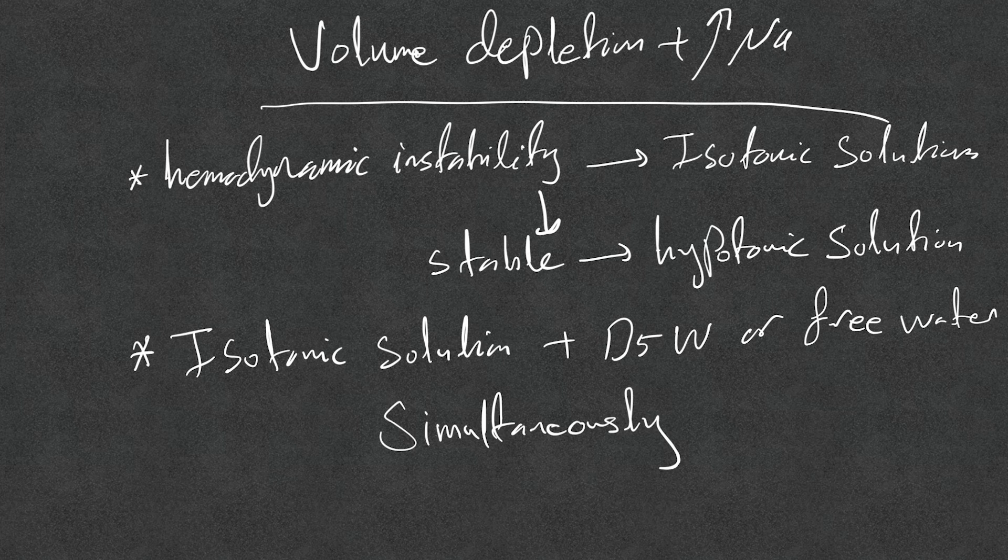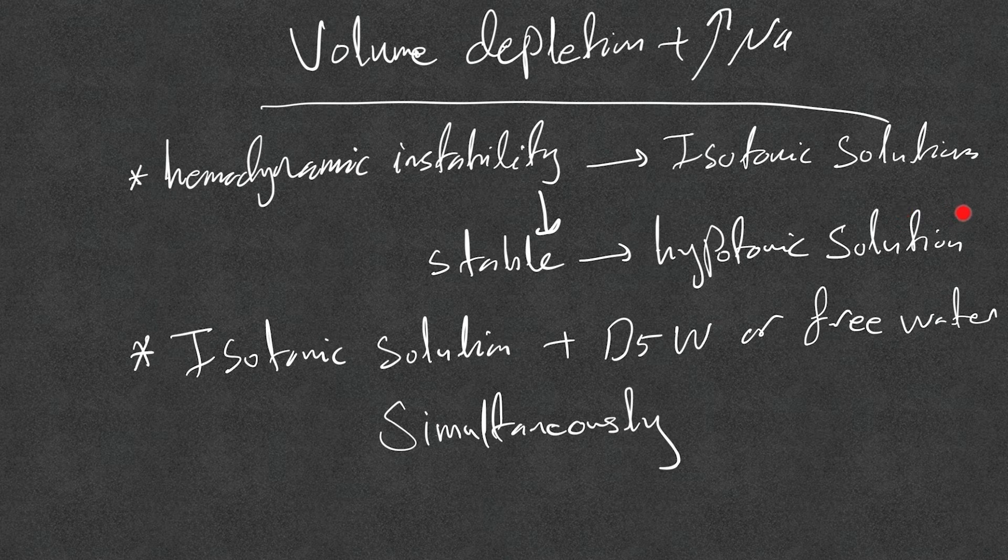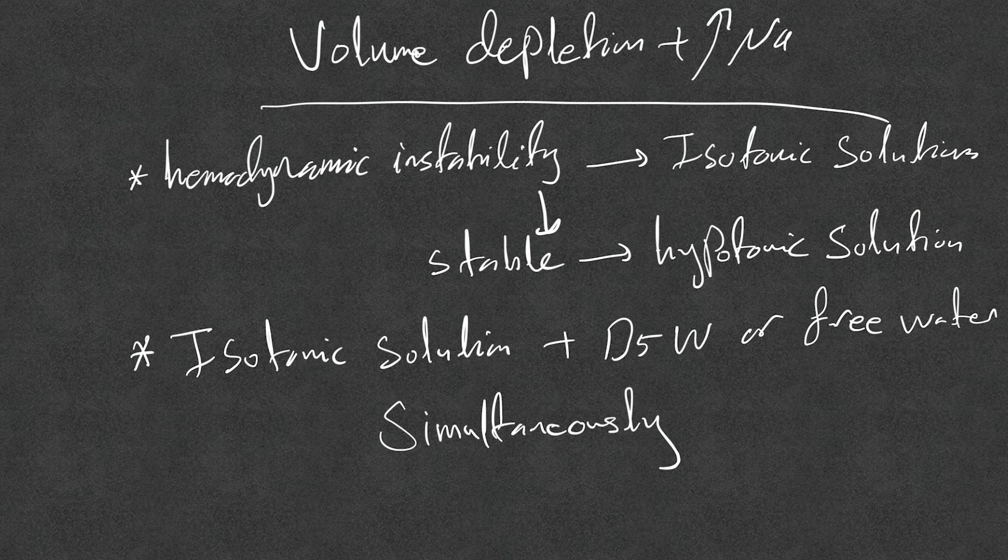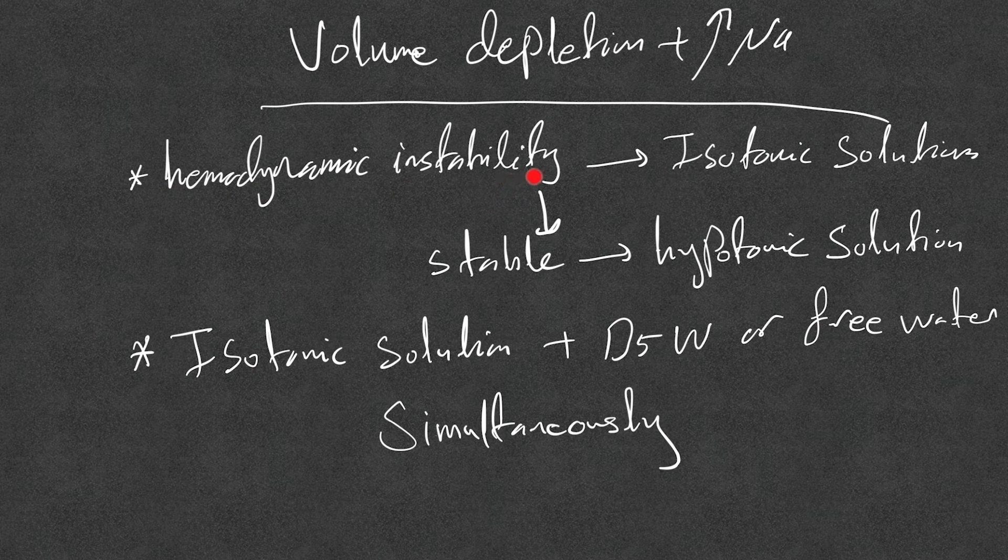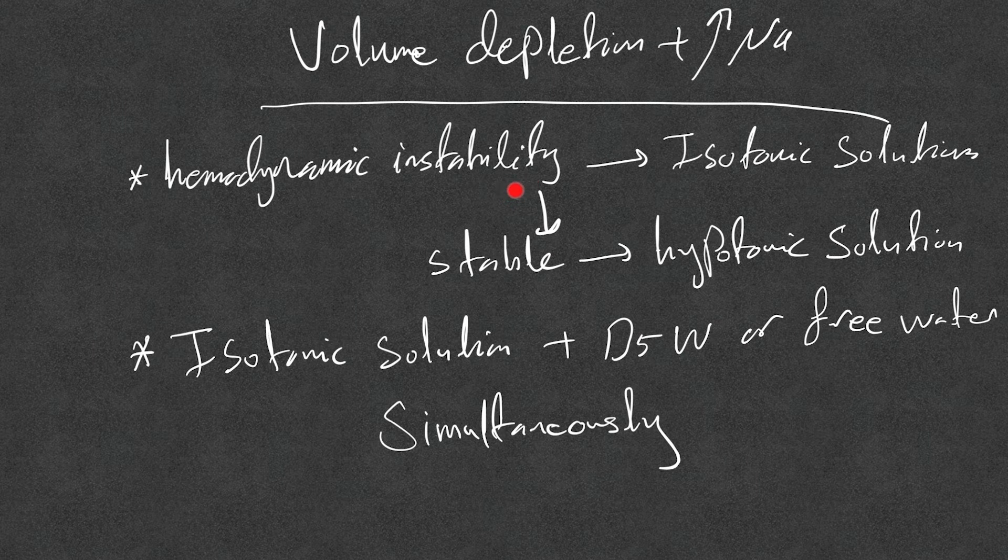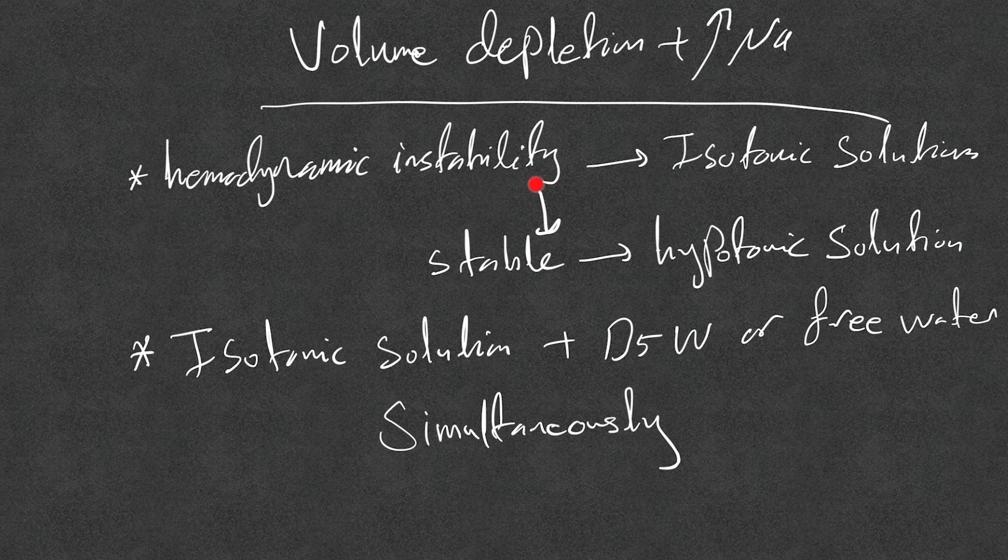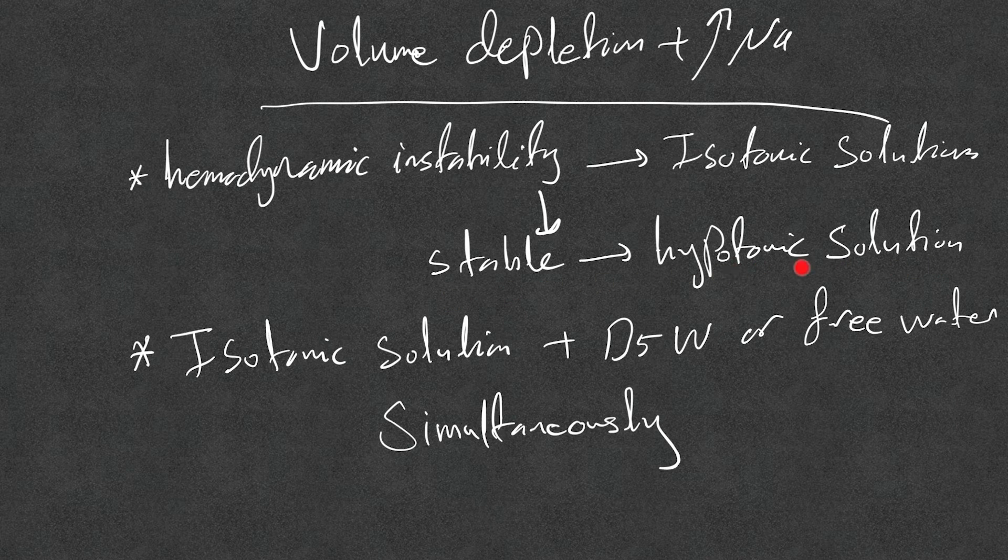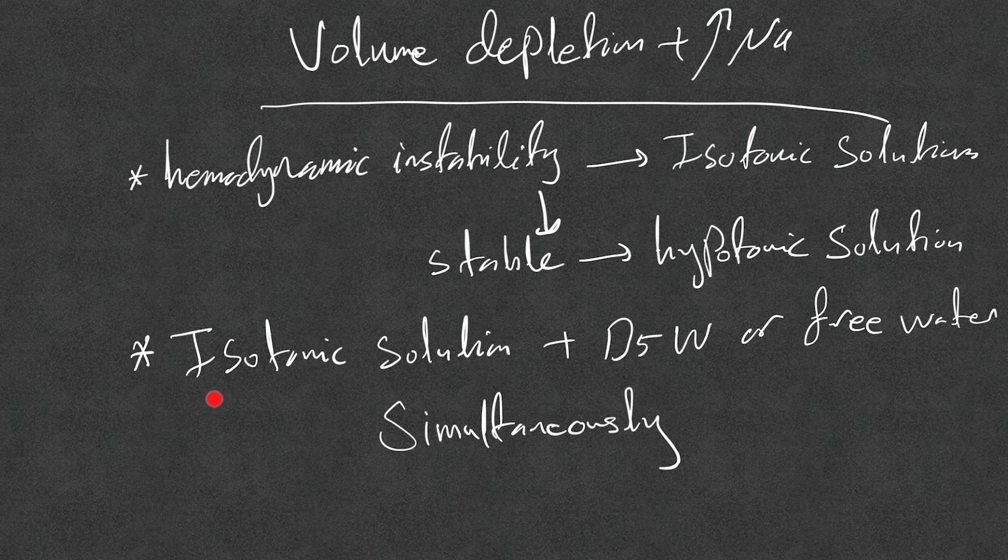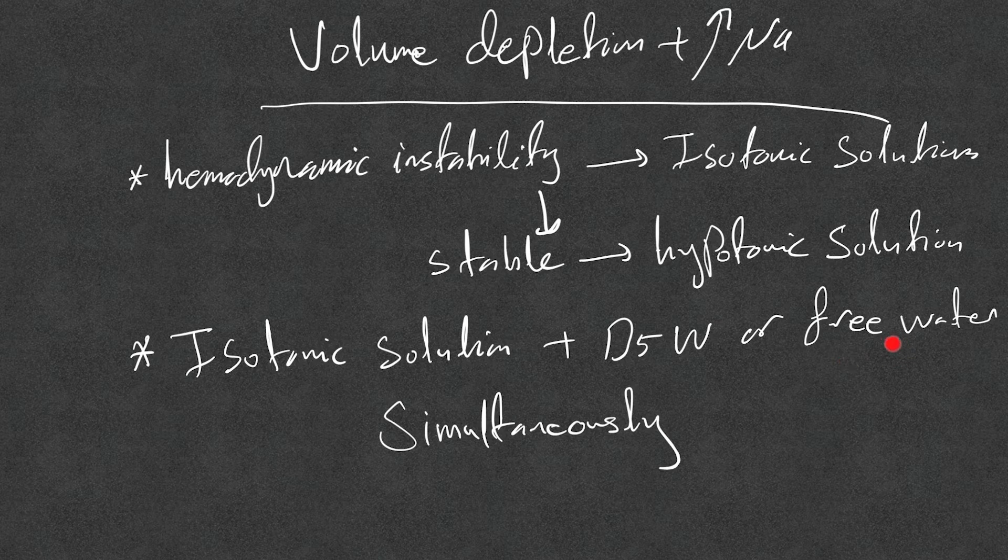Now volume depletion and hypernatremia. Very important. You get a patient who is volume depleted in the ED, severely dehydrated and volume depleted, but the sodium is 160. What do you do? In hemodynamic instability, the patient's tachycardic, hypotensive, or signs of severe volume depletion, renal failure: give isotonic solution. Don't worry about the hypernatremia now. Give two, three, four liters, whatever you need to stabilize the patient. Once the patient stable, you can switch to hypotonic solution like half NS instead of isotonic solution. Another case: what you could do, you can give isotonic solution and start D5W or free water if the patient can take PO simultaneously, at the same time.